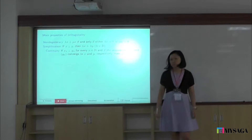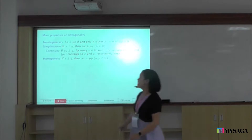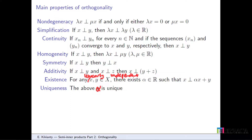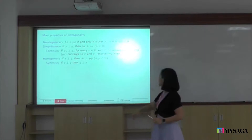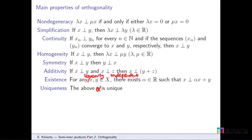Homogeneity is a little bit stronger than simplification — I can multiply x with any scalar and multiply y with whatever scalar; it doesn't have to be the same. Symmetry: if x is orthogonal to y, then y is orthogonal to x. At least, at this point, we know already an example that is not symmetric — from yesterday. If I use my semi-inner product to define orthogonality, already it's not good enough. I already lose symmetry.